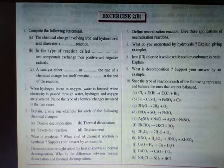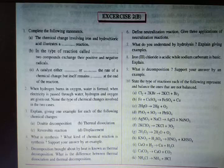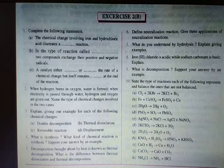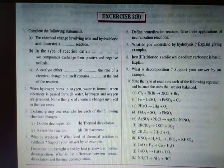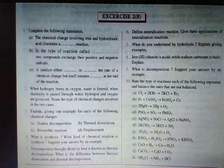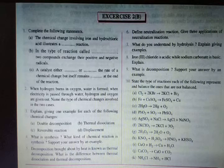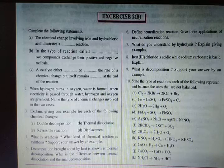Next question: when hydrogen burns in oxygen, water is formed; when electricity is passed through water, hydrogen and oxygen are given out. Name the types of chemical changes involved. Case 1: hydrogen burns in oxygen to give water — this is a combination reaction. Case 2: electricity is passed through water to form hydrogen and oxygen — this is a decomposition reaction.